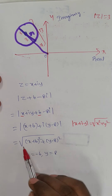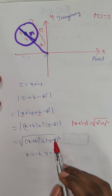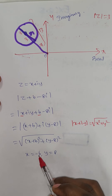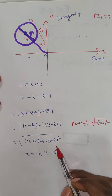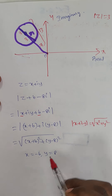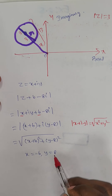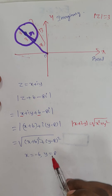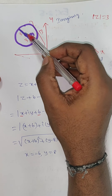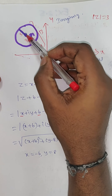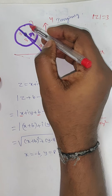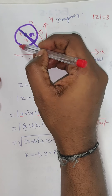Squaring gives us the circle equation. Setting x plus 6 equal to 0 gives x equal to minus 6, and y minus 8 equal to 0 gives y equal to 8. So the center of the circle is the point (minus 6, 8). Now I draw the circle with this center.